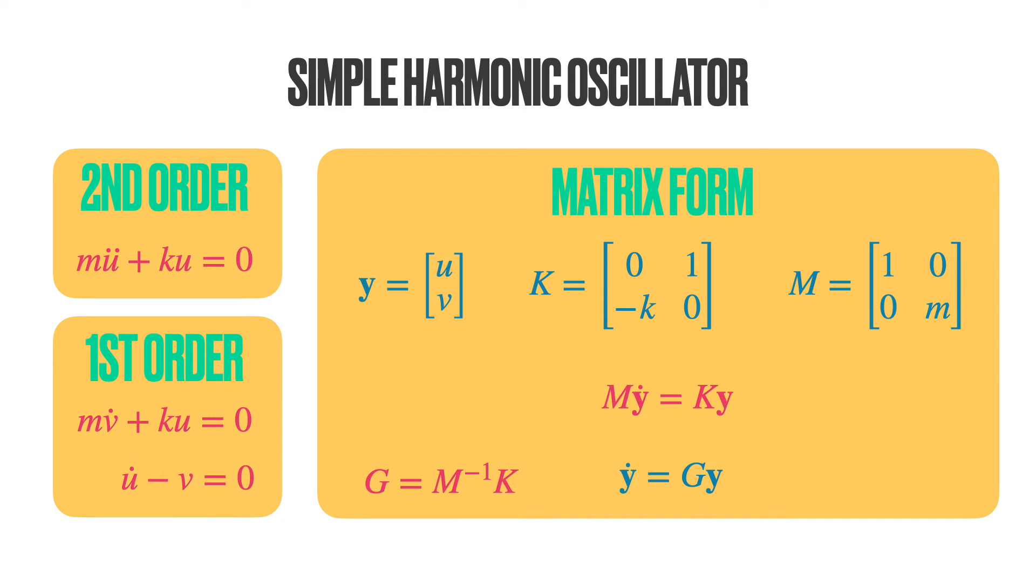Once we have the first-order expressions, we can write this in the matrix form, which makes it much simpler later. So we write the displacement u and the velocity v in terms of a vector y. K can represent the stiffness matrix and m can represent the mass matrix. So you have m times y dot is equal to ky, which is simply the matrix form of the first-order equations. We can still simplify this expression as y dot is equal to gy, where g is simply the inverse of the mass matrix times the stiffness matrix.